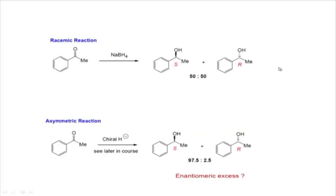If you have a ketone with a methyl and a phenyl, or as in the example of ethyl and methyl, and you reduce with sodium borohydride, you get both R and S because the transition states leading to the S compound and the R compound have the same energy. So the activation energy for the two processes is the same, they are formed at the same rate, and ultimately you get a 50-50 mixture. This is a symmetric synthesis, not an asymmetric synthesis.